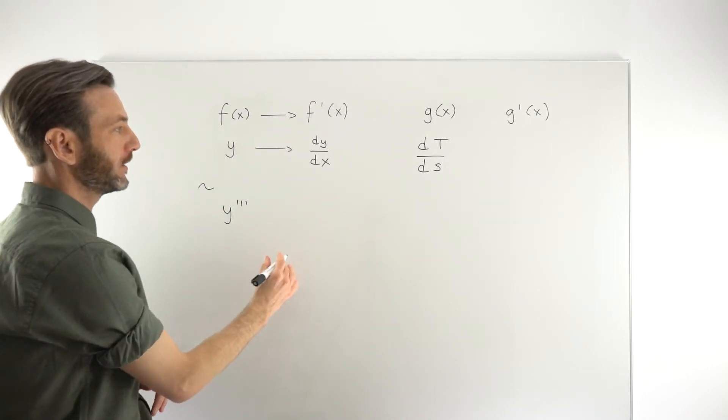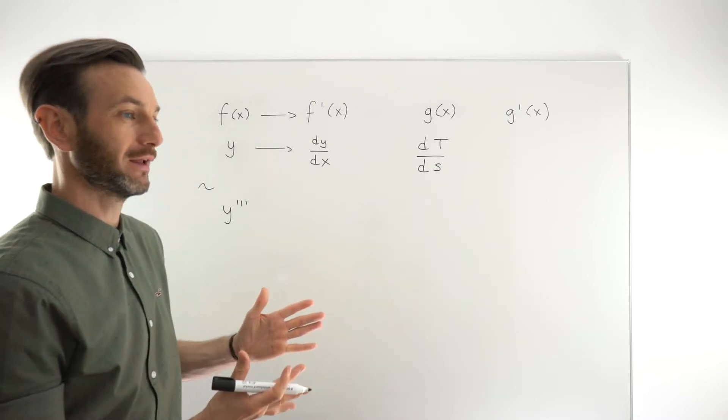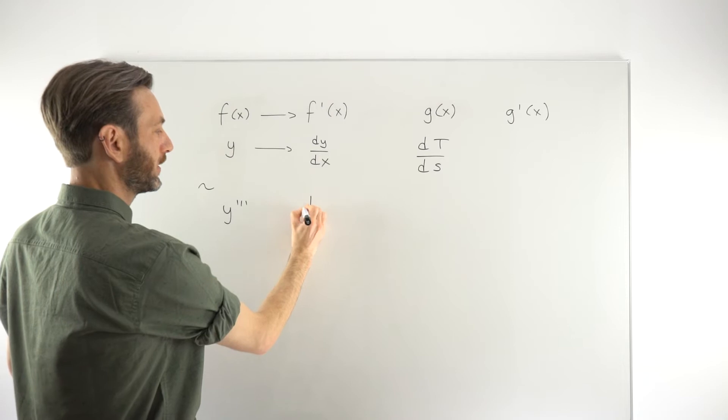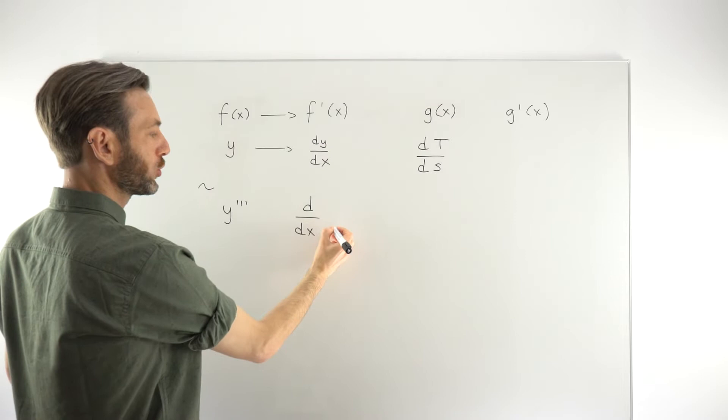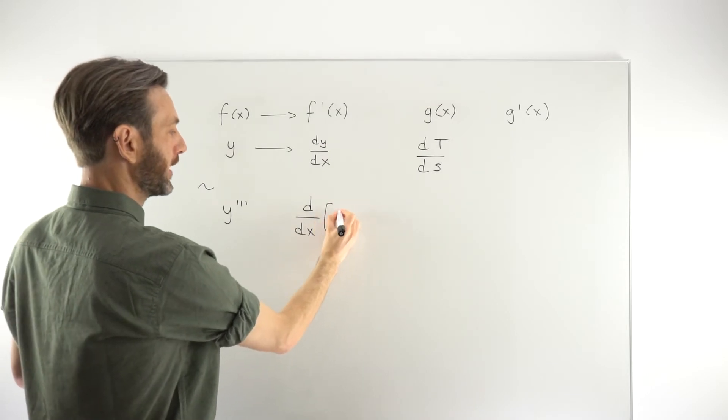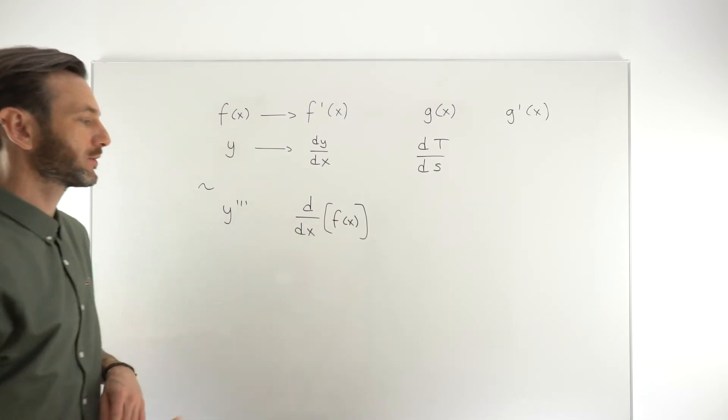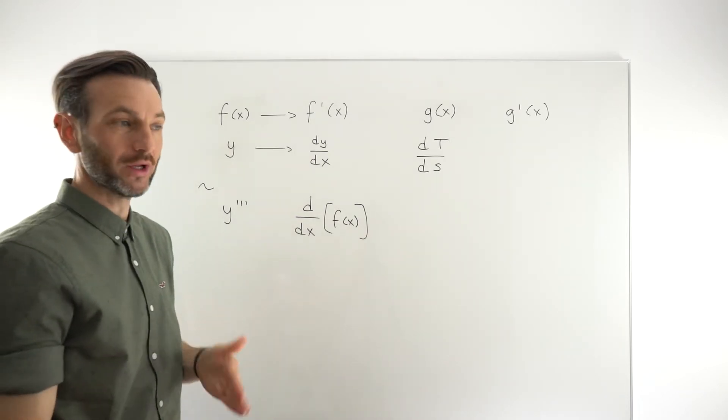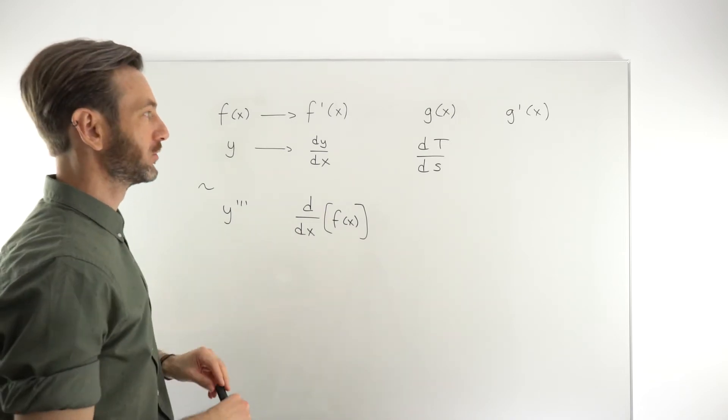Another thing you'll see is if you want to imply that you're taking the derivative without actually yet taking it, then we can use the notation d dx and then here put our function. So I'll maybe put that in a bracket and put f of x like this. So the reason why this might be important is if you want to write a statement which implies that you're going to take the derivative but you've not yet taken it, this can be a good way to do it.